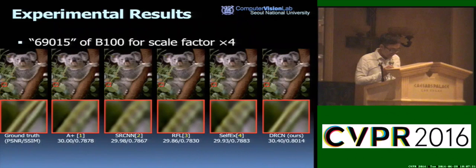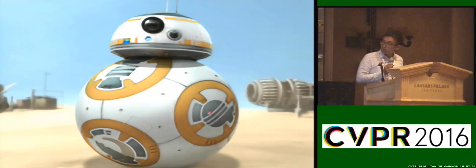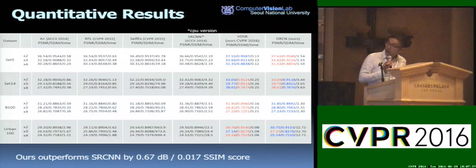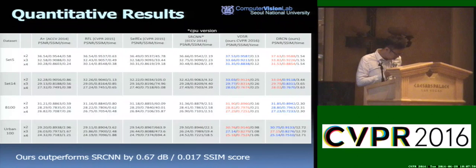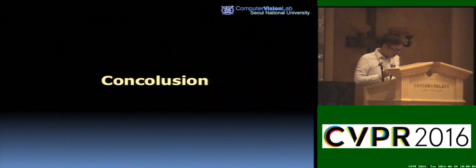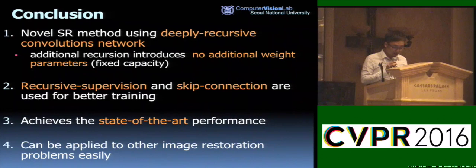We also uploaded a well-known image to Reddit where a blurry robot image becomes much sharper with our DRCN. In the full results table, DRCN outperforms existing methods by a large margin, except for VDSR, which performs better on some benchmarks like BSDS100 and Urban100. In conclusion, we propose a novel SR method using a deeply recursive convolutional network, along with two training techniques — recursive supervision and skip connection — that show superior results. We expect this approach can be applied to other image restoration tasks as well. Thank you for listening.